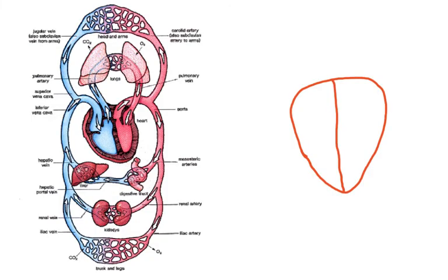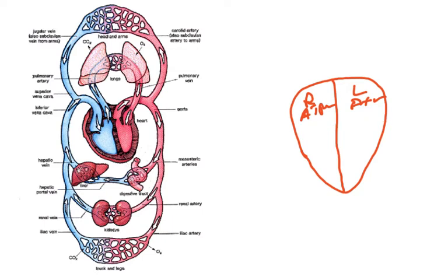Now let's look at the structure of the heart in a little more detail. This is the right side and this is the left side — so right atrium and left atrium. There is a line separating the atria from the ventricles, but basically there are two valves here. The valves on the right side are slightly different from those on the left side.